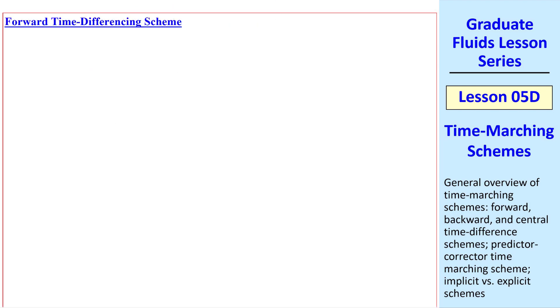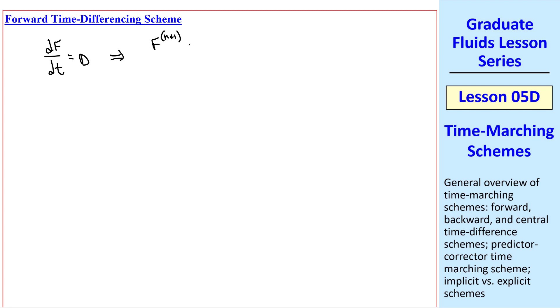I'll discuss the various numerical schemes. The simplest one we can think of is the forward time differencing scheme. Again, our ODE is df/dt equal D. So in a forward time differencing scheme, we let df/dt be fn plus 1 minus fn over delta t. And we call that dn. The right-hand side, dn, is evaluated at tn, where everything is known. We solve this equation for fn plus 1. fn plus 1 is fn plus dn delta t.